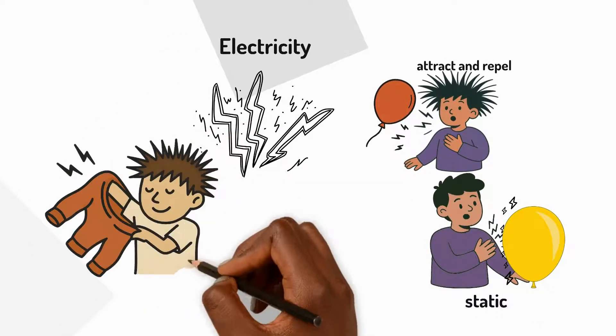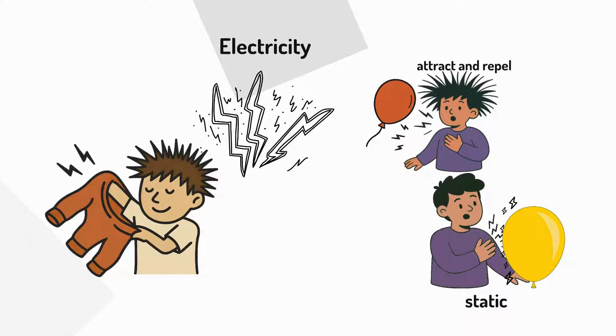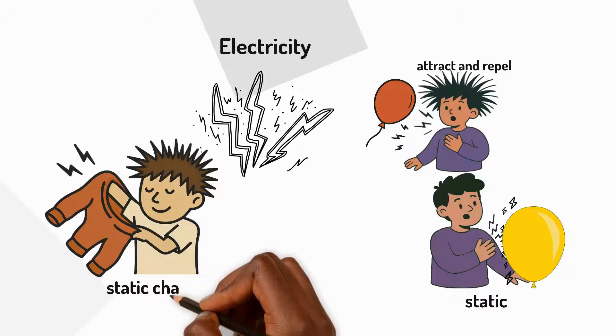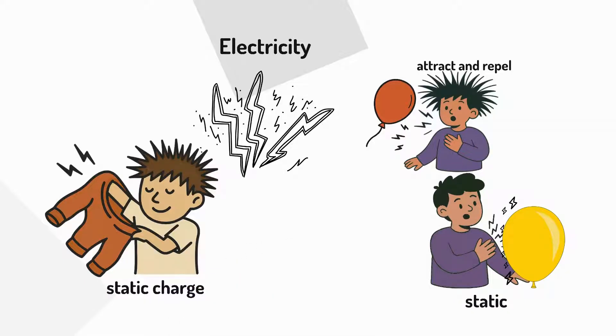When your jumper rubs against your clothes or skin, it builds up a static charge. This happens because tiny electric charges move between the materials. If enough charge builds up after you take off your jumper, small pieces of fluff or dust might suddenly be attracted to your jumper.